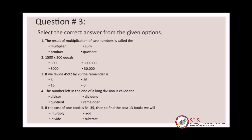Option number three: if we divide four thousand five hundred and ninety-two by twenty-six, the remainder is — six, twenty-six, sixteen, or zero? We will divide 4592 by twenty-six to find the remainder.